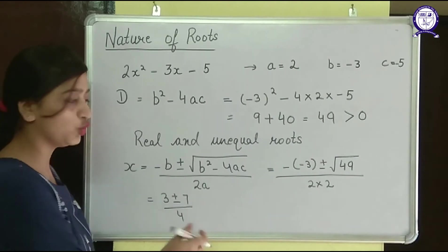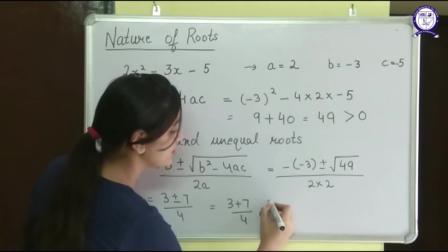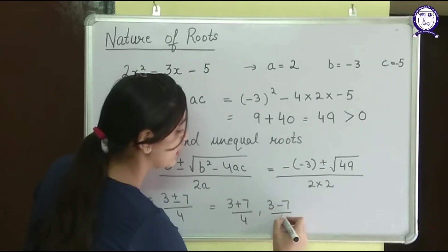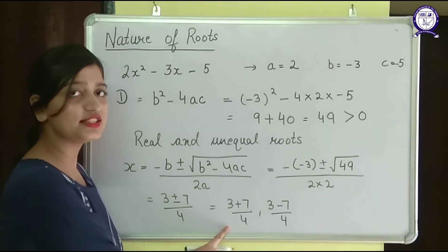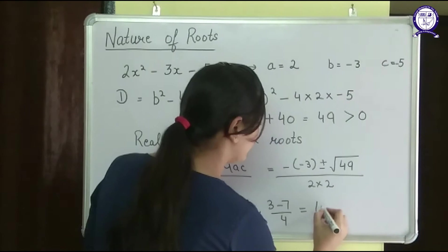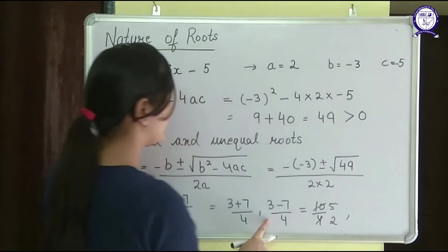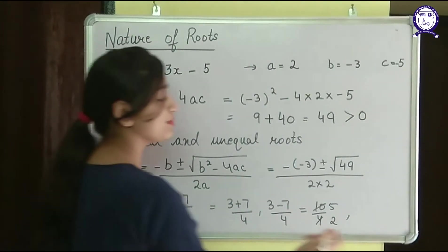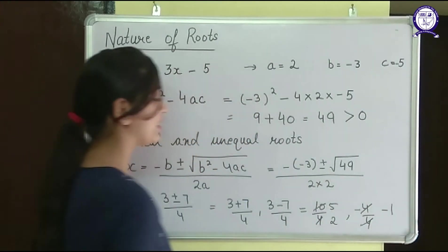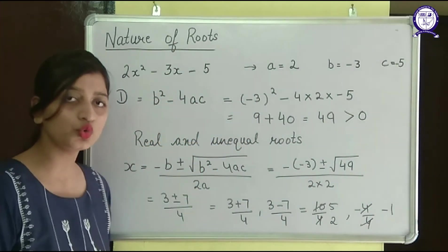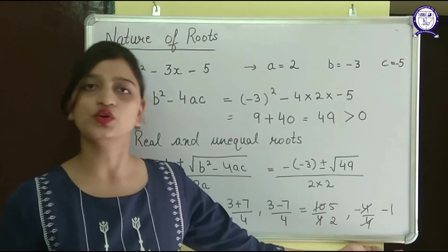The values are 3 plus or minus 7, upon 4 — since root 49 is 7. So I have two roots: 3 plus 7 upon 4, and 3 minus 7 upon 4. The first gives 10 upon 4, which is 5 upon 2. The second gives 3 minus 7 which is minus 4 upon 4, that is minus 1. So there are two roots — 5 by 2 and minus 1 — and they are not equal to each other.